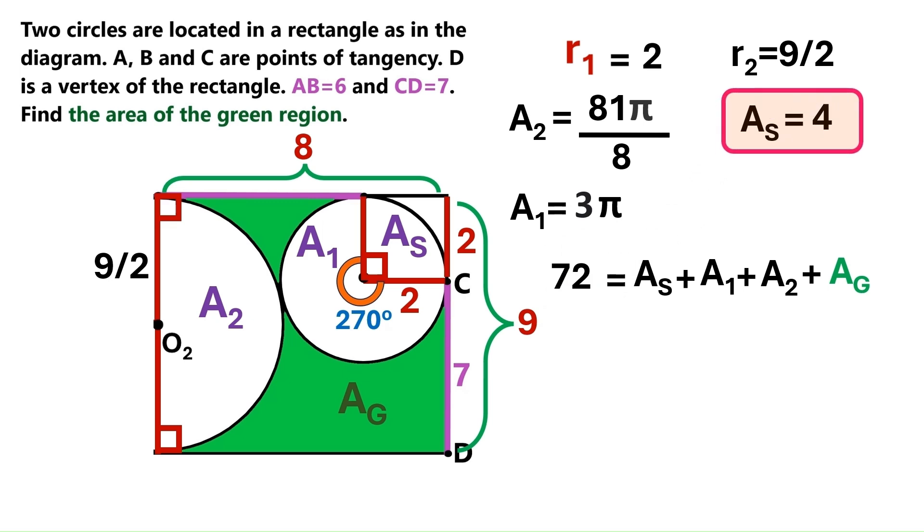Next, area s is 4, so let's put that number here. Area 1 is 3 pi, so let's put that number here too. And area 2 is this weird thing that I don't want to read out, so let's just put that here as well.